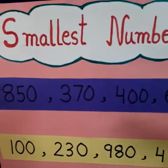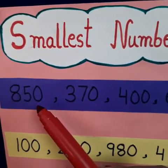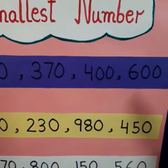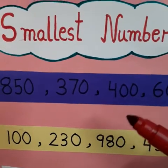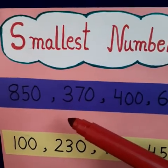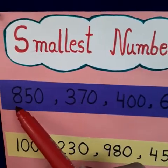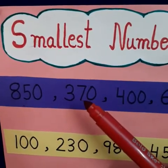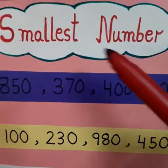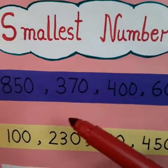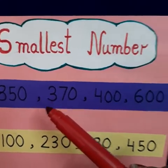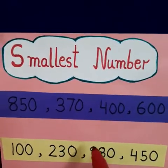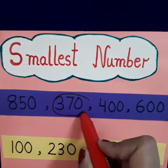In the first set, the numbers are 850, 370, 400, and 600. In the same way as we found out the largest number, we observed the hundreds place first. Here at the hundreds place, the digits are 8, 3, 4, and 6. We have to find the smallest, so the smallest hundreds digit is 3, which is in 370. So this number will be the smallest one and we will circle our smallest number in this set.